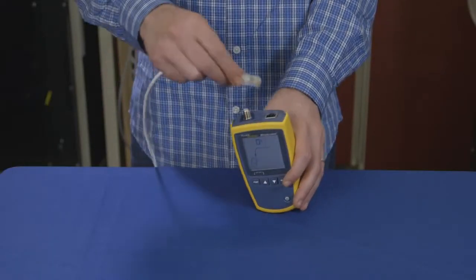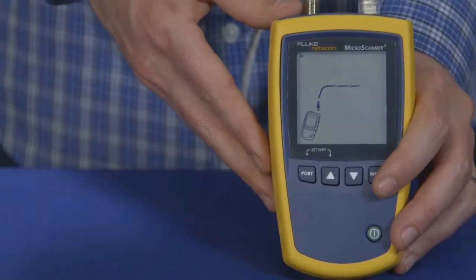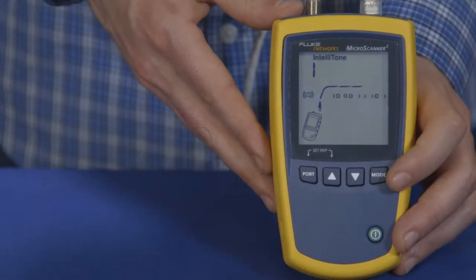Now we're going to find out where this drop goes. We see it's plugged into a switch somewhere. To find the drop, start toning with the Microscanner 2.